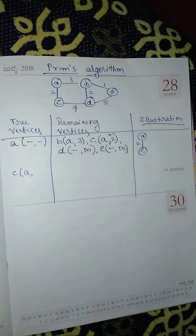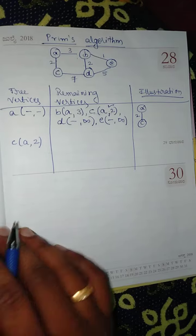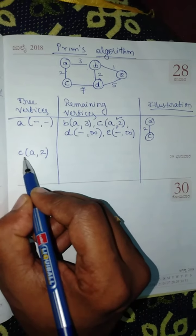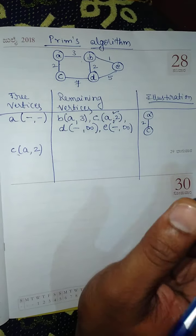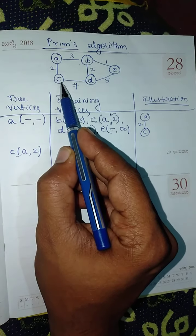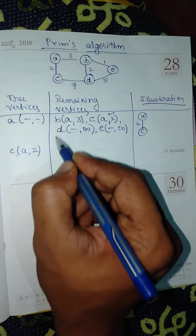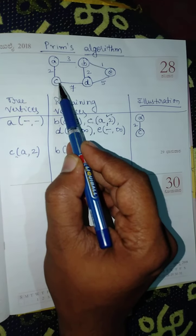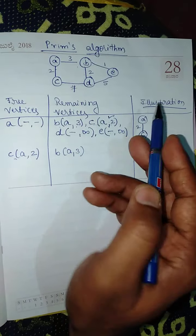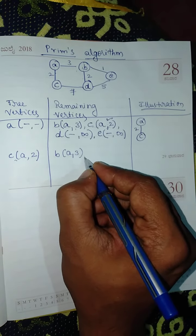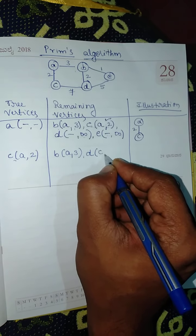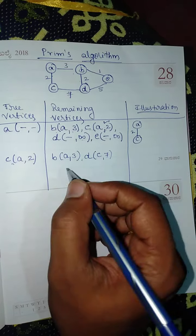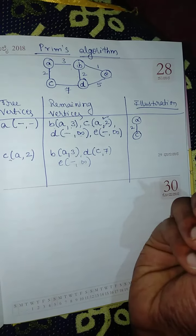From A, C is reachable with cost two. Now continue with the remaining edges from vertex C to vertices B, D, and E. Vertex B is not directly reachable from C, so keep B as it is — previous value (A, 3). Vertex D is reachable from C with a cost of seven, so update D with cost seven. Vertex E is not reachable from C, so E remains infinity.